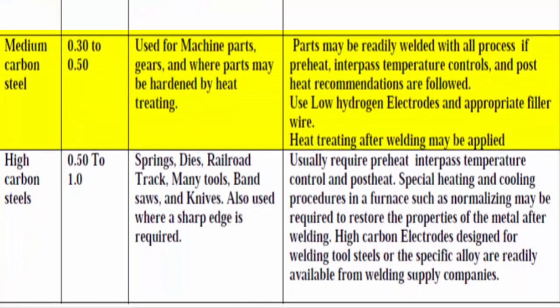Medium carbon steel group, content 0.30–0.50%. Typical usage: used for machine parts, gears, and where parts may be hardened by heat treating. Weldability: parts may be readily welded with all processes if preheat, interpass temperature controls, and post-heat recommendations are followed. Use low hydrogen electrodes and appropriate filler wire. Heat treating after welding may be applied.